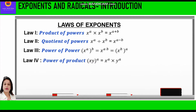The fourth law is power of product, which says x into y whole raised to power a is equal to x raised to power a into y raised to power a. The fifth law is power of quotient, which says x upon y whole raised to power a is equal to x raised to power a upon y raised to power a.